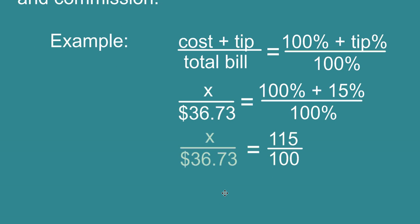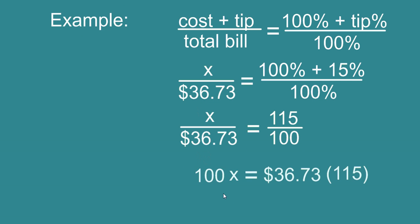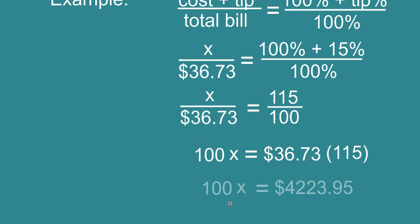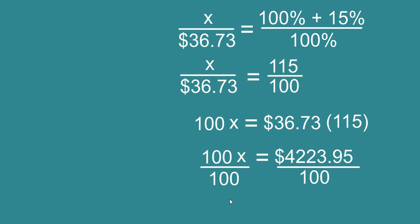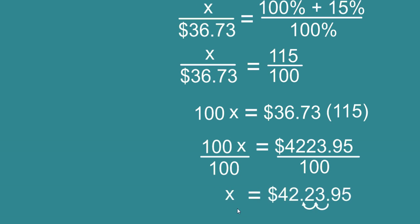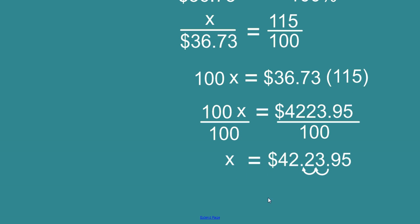And you go about this whole process and use your cross products and then solve for x by dividing both sides by a hundred and you get x equals this value and then finally when you round to the nearest cent you get $42.24.